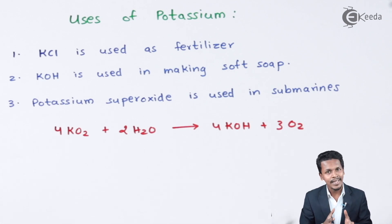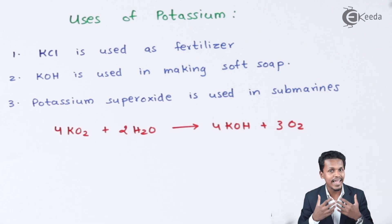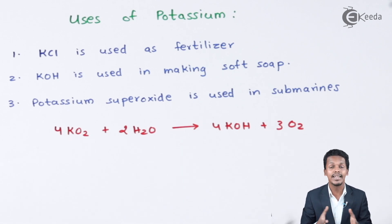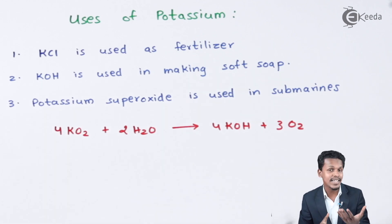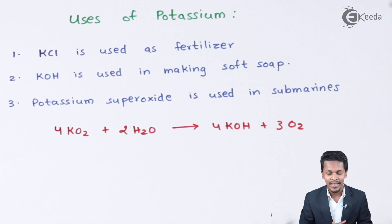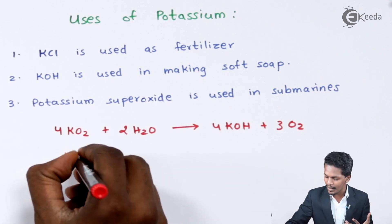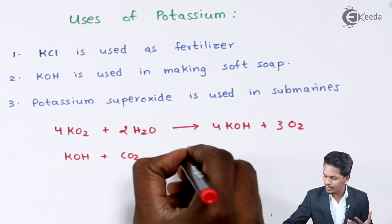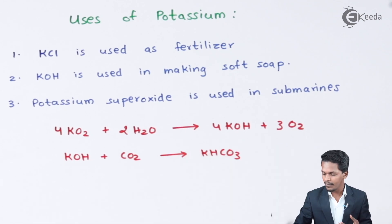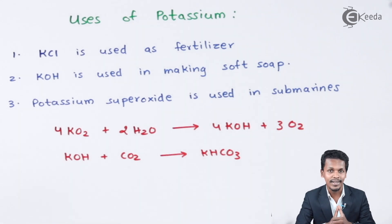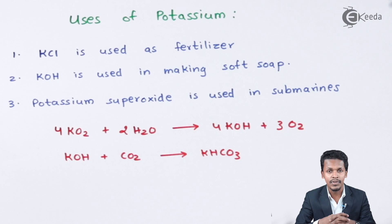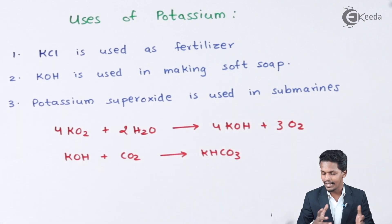The role of potassium hydroxide produced in that reaction is to absorb the carbon dioxide that is exhaled. KOH reacts with CO₂ to produce KHCO₃, thereby decreasing the carbon dioxide level so the traveler can breathe oxygen. Potassium superoxide plays a vital role not only in submarines but also in aircraft flying at high altitude and in spacecraft.